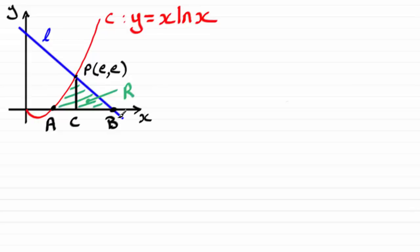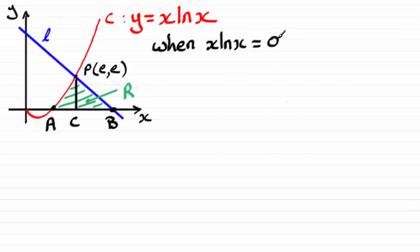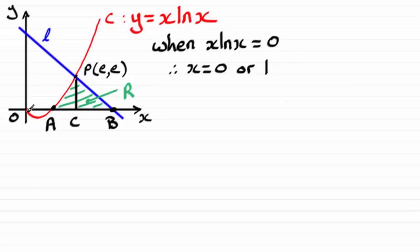To find the coordinates of A, we set y on the curve to 0. So x·ln(x) = 0. We've got a product equaling 0, so either x = 0, or ln(x) = 0. The natural log of x equals 0 when x = 1. Clearly A is not at the origin, so A must have an x-coordinate of 1. Therefore the coordinate A is (1, 0).